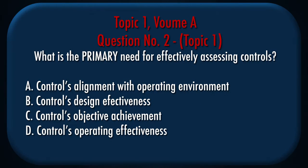Question number 2, Topic 1. What is the primary need for effectively assessing controls? A. Controls alignment with operating environment. B. Controls design effectiveness. C. Controls objective achievement. D. Controls operating effectiveness.